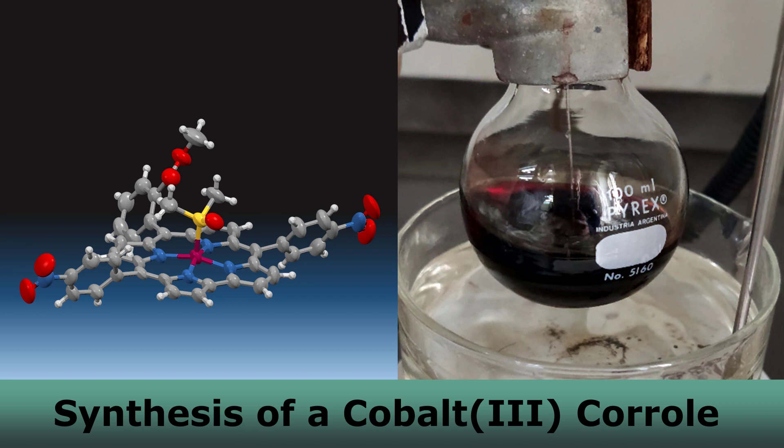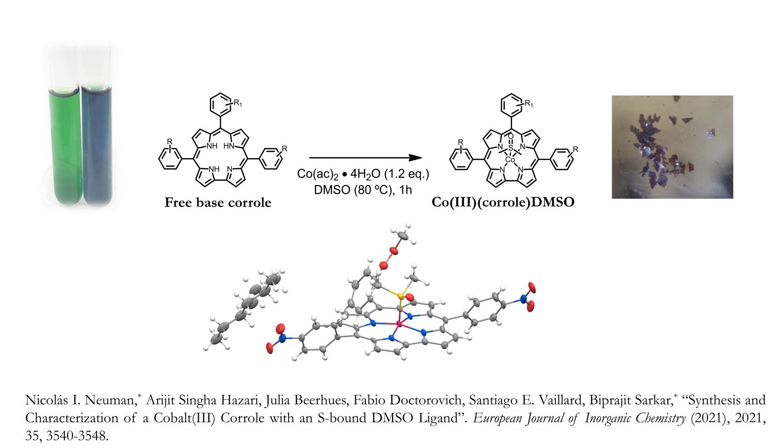In this video we are going to synthesize a cobalt corrole with a dimethyl sulfoxide apical ligand. The procedure was reported by us in the European Journal of Inorganic Chemistry last year.